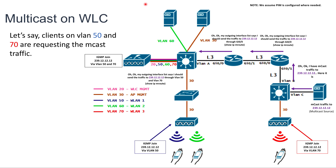Once it reaches the switch, the outgoing interface list from 'show ip mroute' says traffic must be sent through VLAN 50 and VLAN 70. Since VLAN 50 and VLAN 70 are local on that switch, it moves to Layer 2 forwarding — it checks its IGMP table to determine which ports require that Multicast traffic. It notices that on the port channel towards the controller, VLAN 50 and VLAN 70 need that traffic, so it sends the traffic towards that interface on those two VLANs.